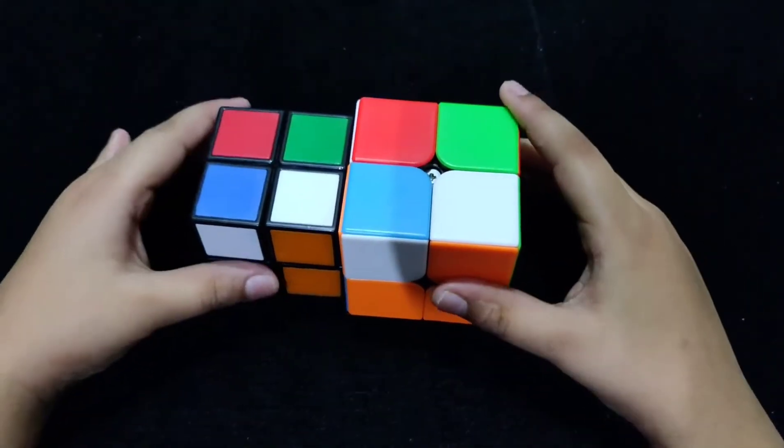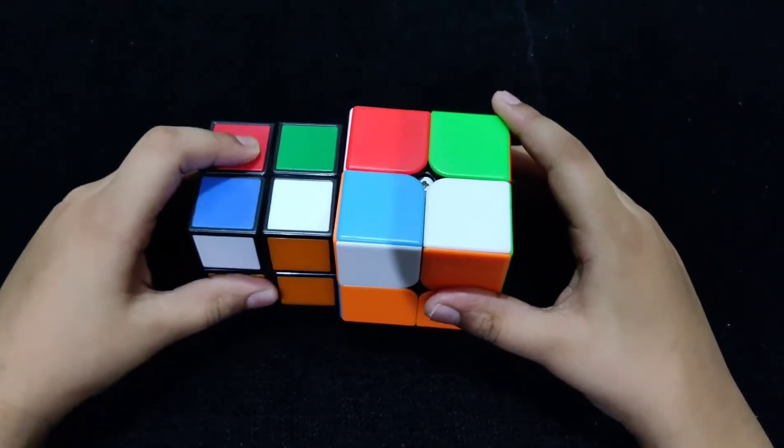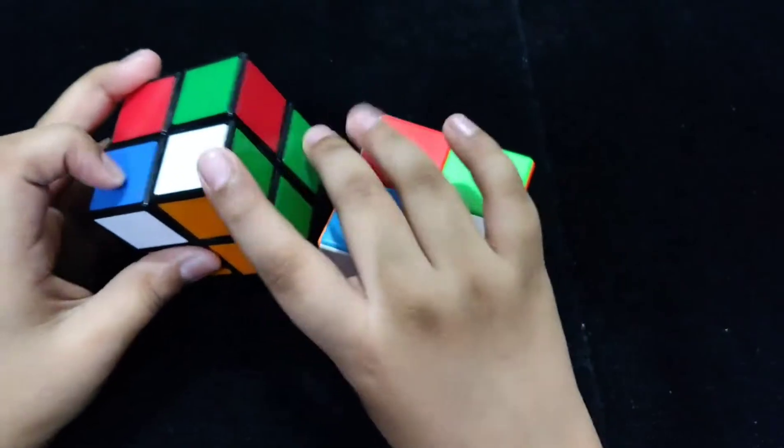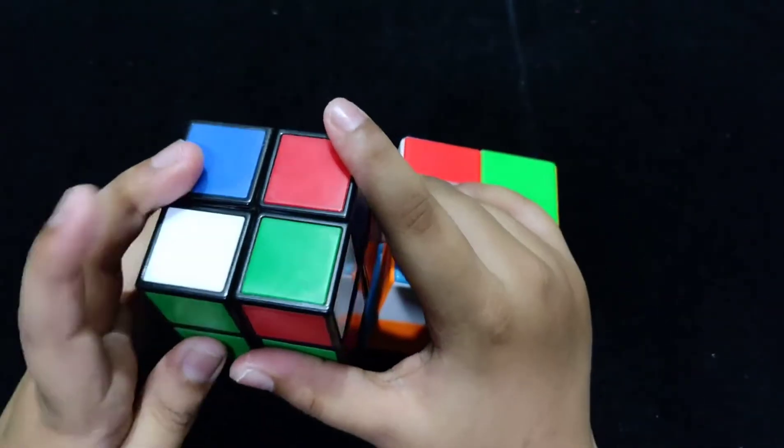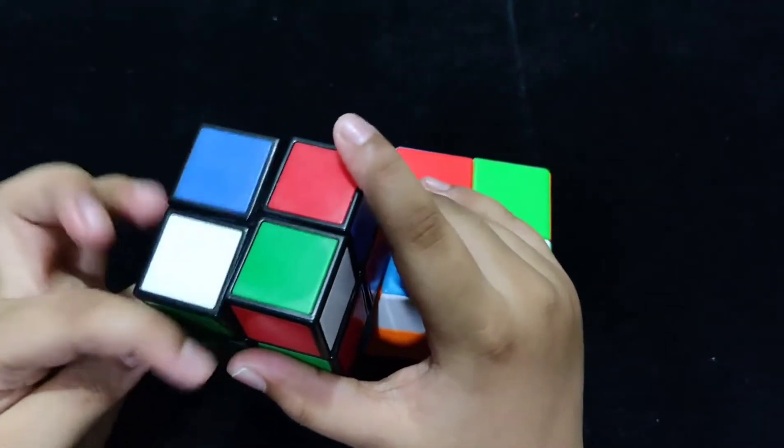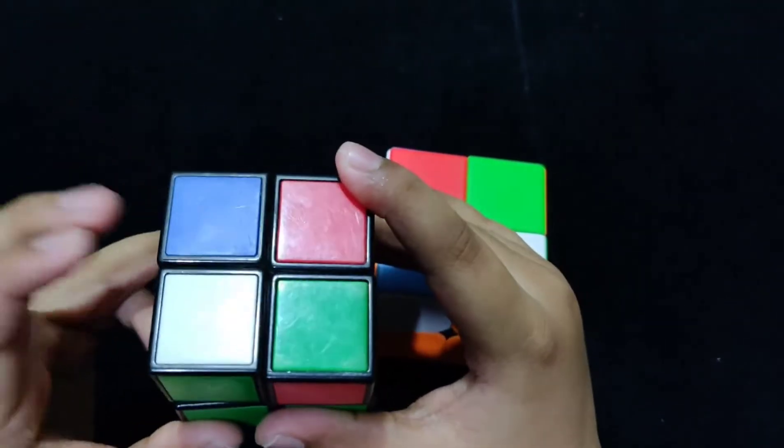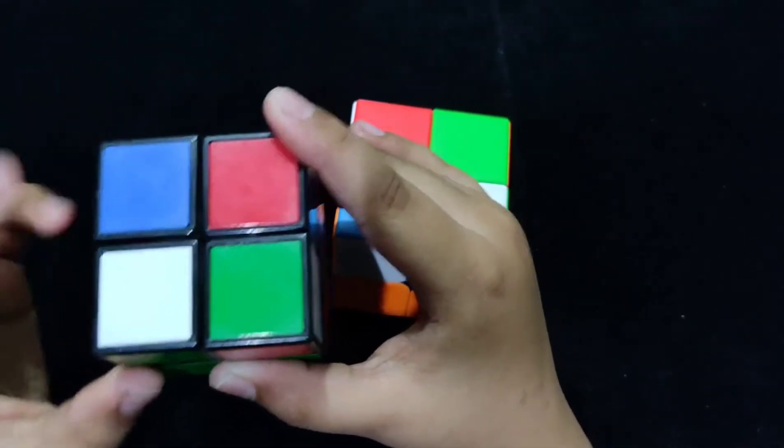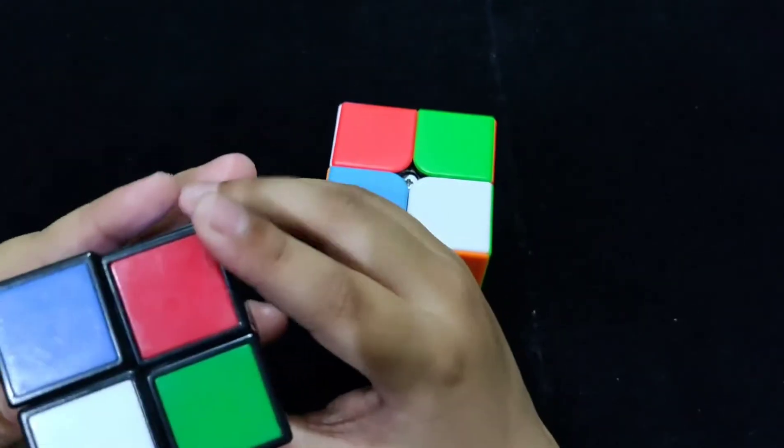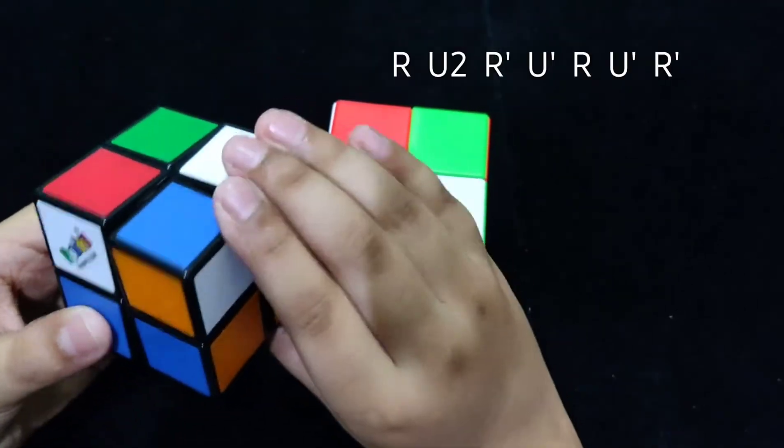Now, the next case I am going to be showing you is Anti-Soon. So, if you keep one corner on your left bottom and see that there is no corner facing towards you, it is actually facing towards your left. So, we keep the corner on our right top and do this algorithm.